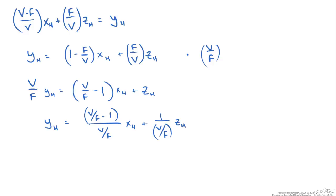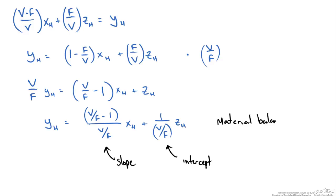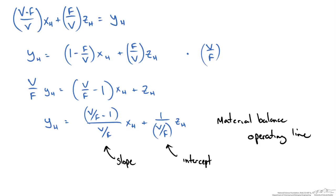Here we have our slope and our intercept, giving us our material balance operating line. We will use this with equilibrium data to solve an example problem.